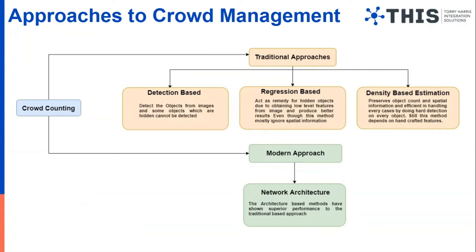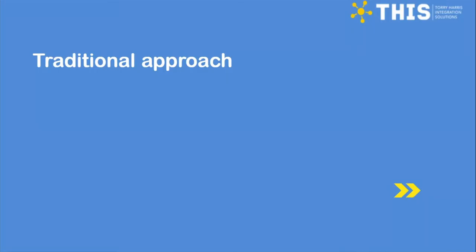Now we come to the approaches part. There are two approaches for creating a crowd management solution. One is traditional approaches and the second is modern approaches. In traditional approaches, there are three methods: detection-based, regression-based, and density-based estimation. In modern approaches, we will be using network architecture. Now we will see deeply into those methods one by one so we can understand what each does and what its limitations are.